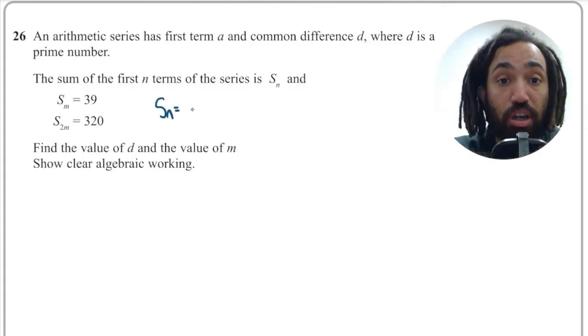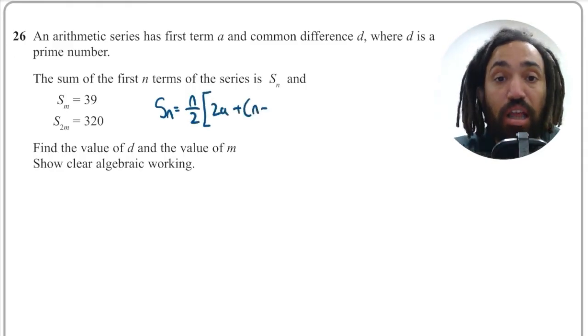The first thing you need to know is the arithmetic summation formula which is given in the formula booklet. It is N over 2 multiplied by 2A plus N minus 1D is the summation.